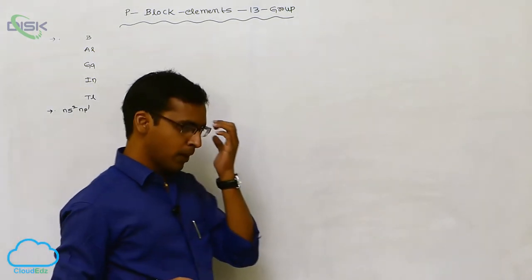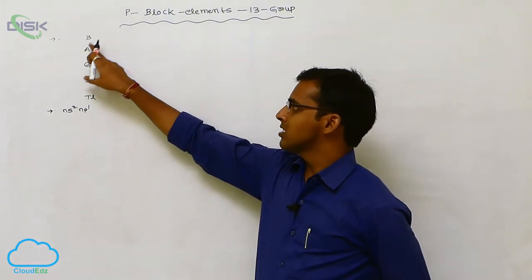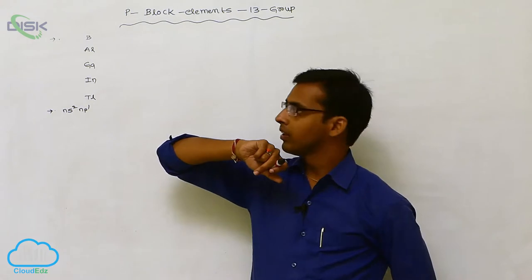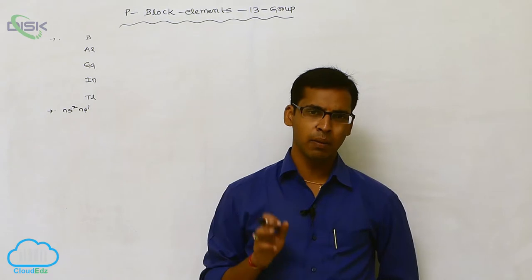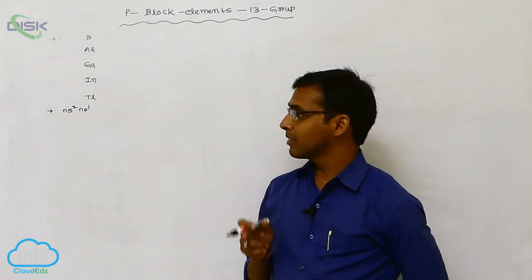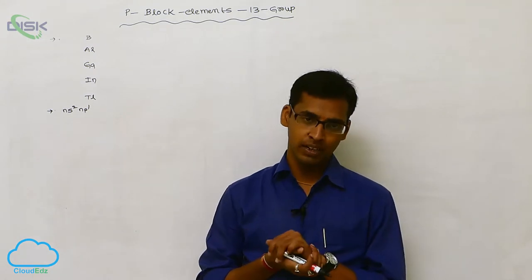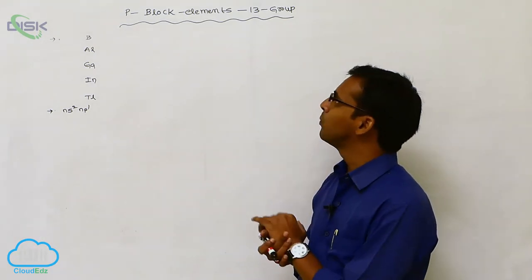In the 13A group elements, boron is a non-metal while aluminum, gallium, indium, and thallium are all metals. Despite this difference, all elements in the group show the same chemical properties.